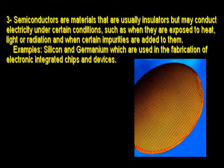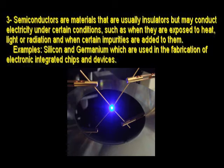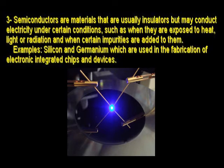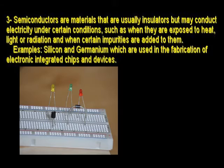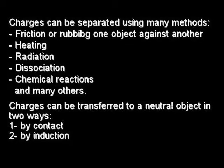Semiconductors are materials that are usually insulators but may conduct electricity under certain conditions, such as when they are exposed to heat, light, or radiation and when certain impurities are added to them. Examples: silicon and germanium, which are used in the fabrication of electronic integrated chips and devices. Charges can be separated using many methods such as friction, heating, radiation, dissociation, and chemical reactions.